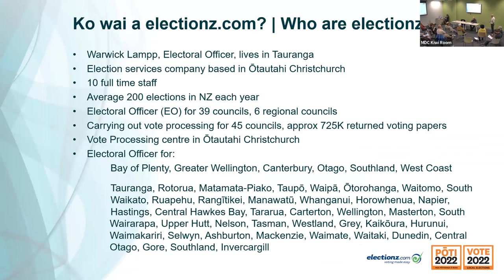I've got a couple of screens and I always get confused as to which one I should be looking at. This is me — I live in Totonga, our offices are in Christchurch. We work for lots of councils — 45 councils, 39 as EO plus 6 regional councils — and we do the vote process for seven of those. All the voting papers from our councils go to a processing centre in Christchurch. We do lots of elections all the time, about 45 on the go at the moment, and councils are our only election that doesn't have an online component — it's postal.